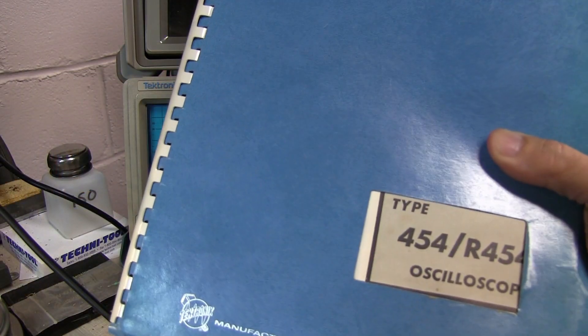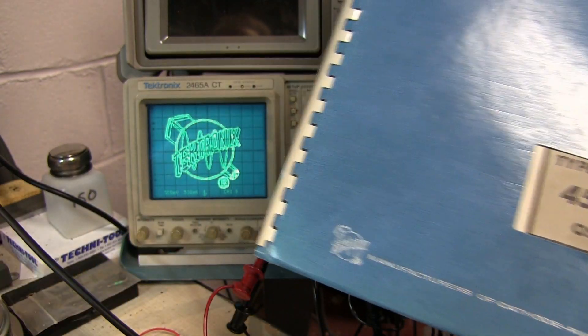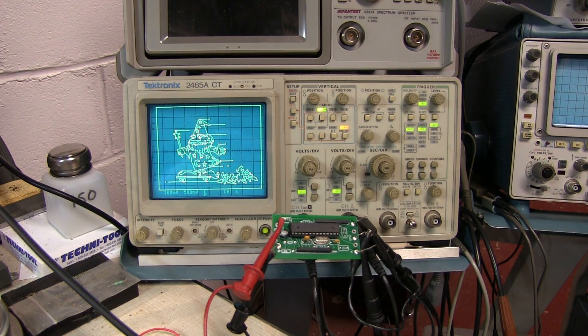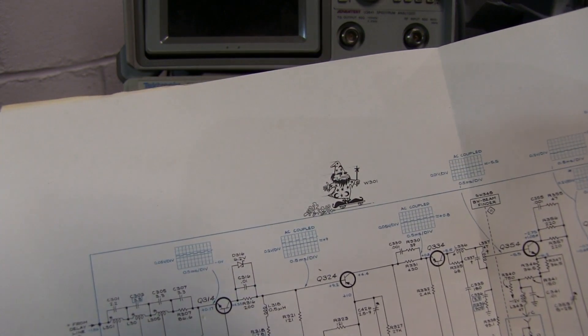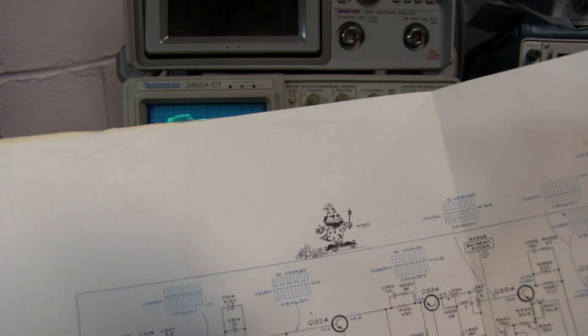In fact, if we look at this old service manual for the 454 scope, there's the logo that we're displaying in XY mode here. And if we turn to the vertical output amplifier schematic, there's where our wizard makes an appearance. So that's where the wizard shown in this graphic comes from.